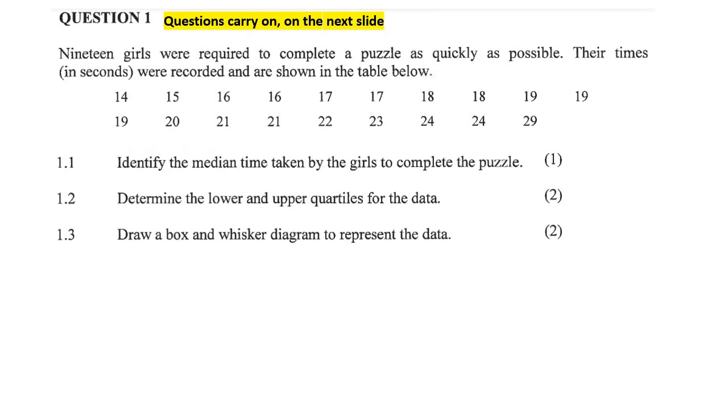So 19 girls were required to complete a puzzle as quickly as possible. Times were recorded and they're shown in the table below. So always make sure that the data is arranged from smallest to biggest, and thankfully it is. And so remember, we don't go this way. We're going from the smallest number, and then we're just letting the numbers get bigger, and then we carry on over here again.